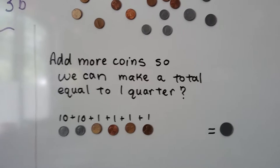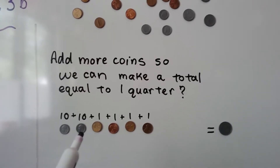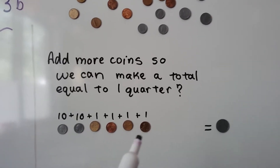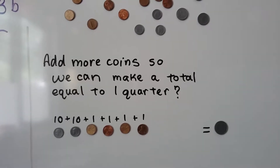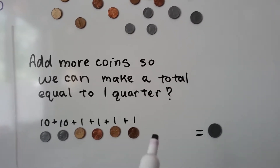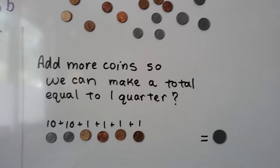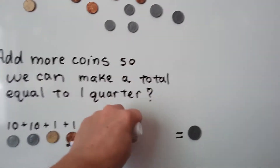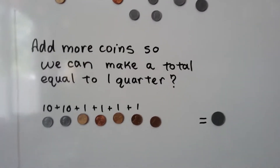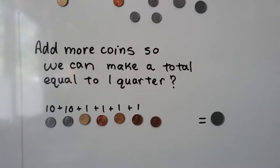We have a 10 and a 10. 10 plus 10 is 20 — then 21, 22, 23, 24. So which coin would I need to make this equal to the quarter? We'd need to add another penny, wouldn't we? There we go. Now we have five pennies and that's equal to a quarter.